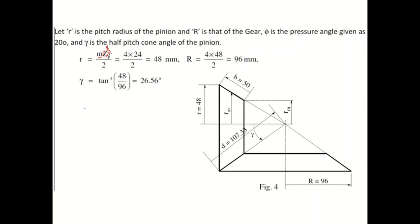Next, to find the gamma value, the formula is: γ = tan⁻¹(r / R) = tan⁻¹(48 / 96). So the gamma value is 26.56 degrees. Now we need to find r_average. We also need to determine the forces F_axial, F_radial, and F_tangential.